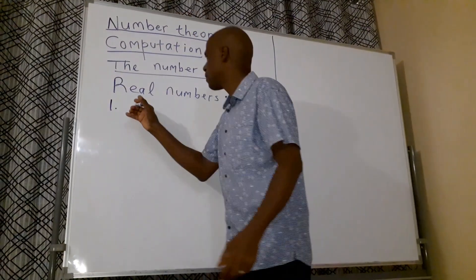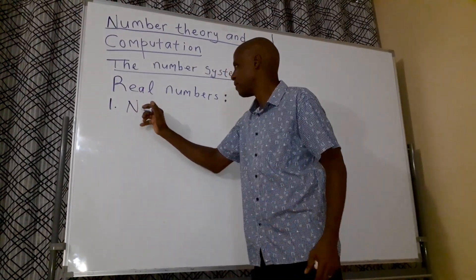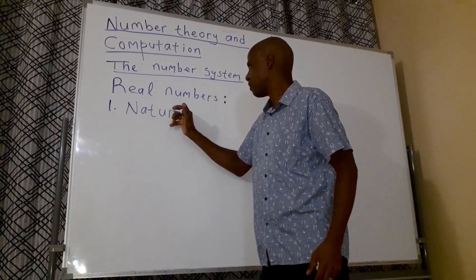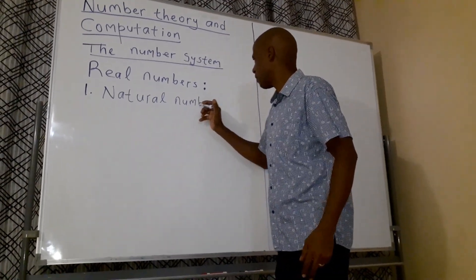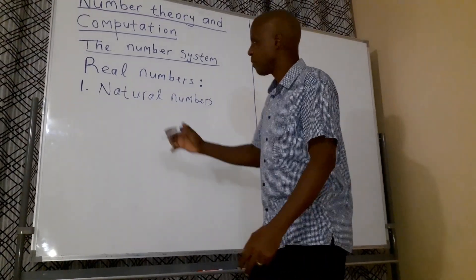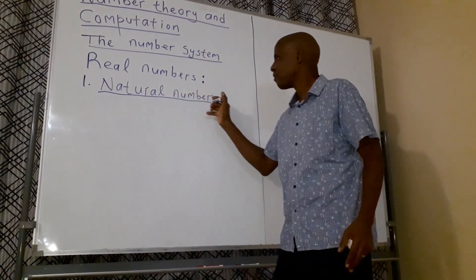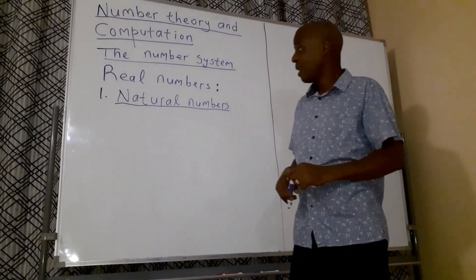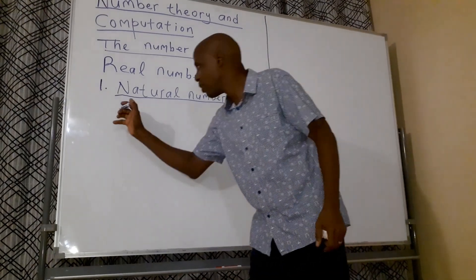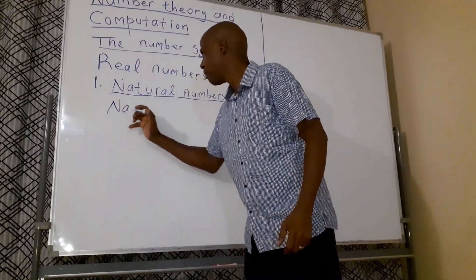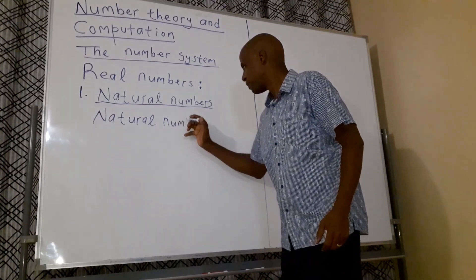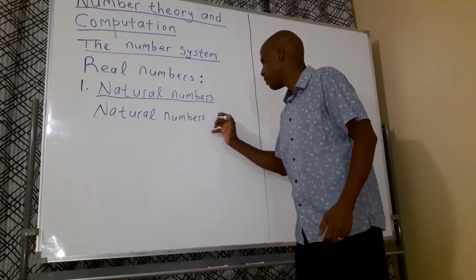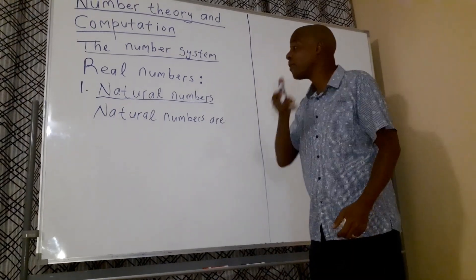The first one you need to know is called Natural Numbers. Now what are Natural Numbers? Well, Natural Numbers represent counting numbers — so Natural Numbers comprises the set of what is called counting numbers.